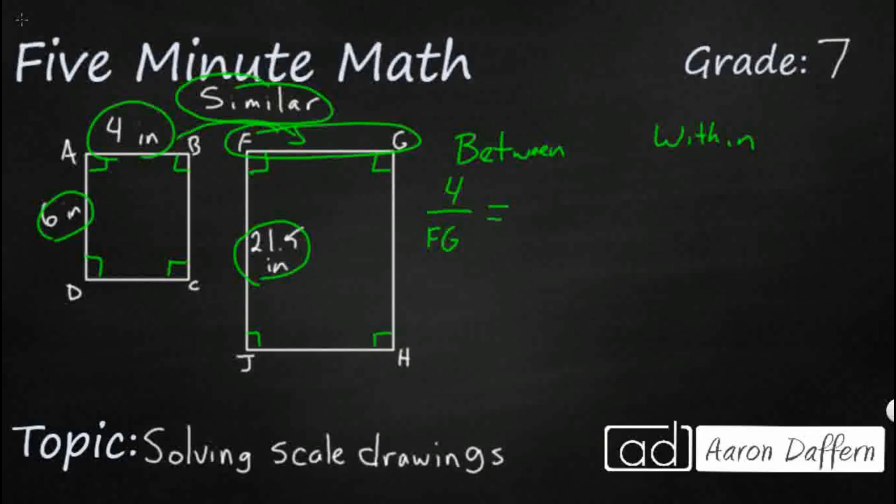So our smaller rectangle is in the numerator, so let's make our smaller rectangle this other side six inches in the numerator. Then our larger rectangle is in the denominator and let's make this matching FJ side which matches our AD in the denominator. So if we do our cross multiplication, we're going to have four times twenty one point five and that's going to equal six times our FG. That's going to be our variable.